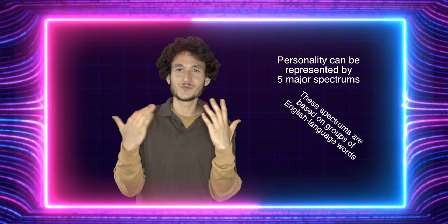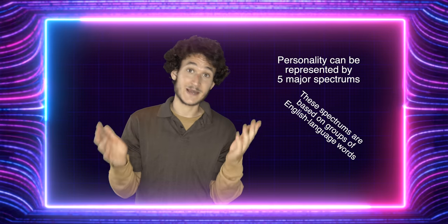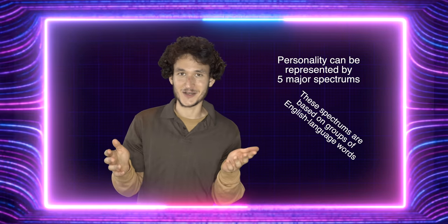It's built off of some axioms. The axiom of the OCEAN model is something like: humans can be represented personality-wise through five spectrums, which is openness, closedness, conscientiousness, extroversion, agreeableness, and neuroticism.